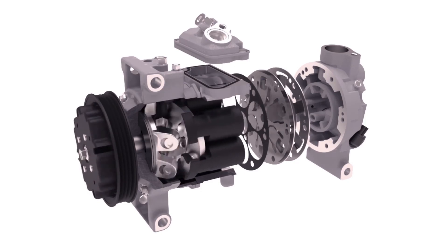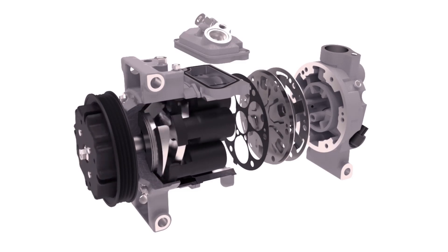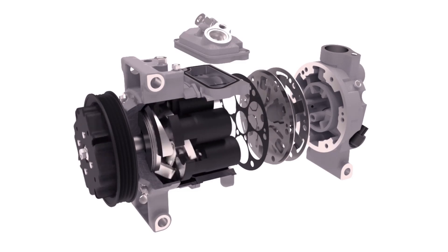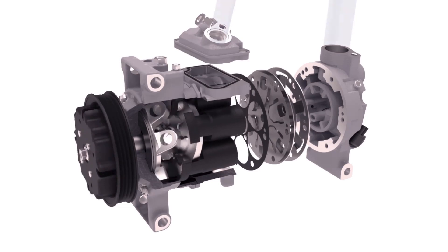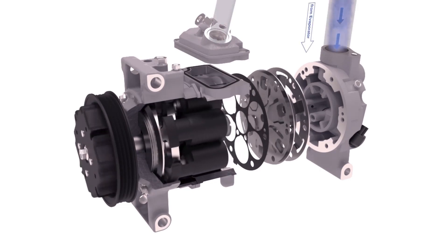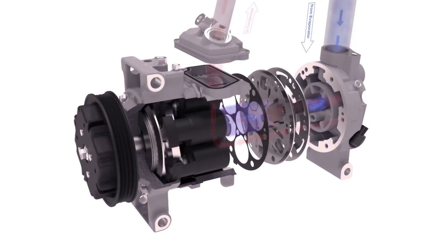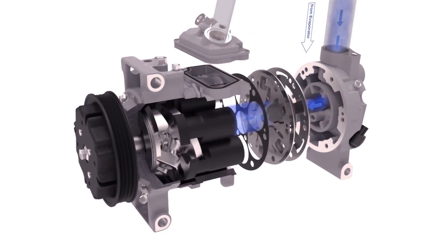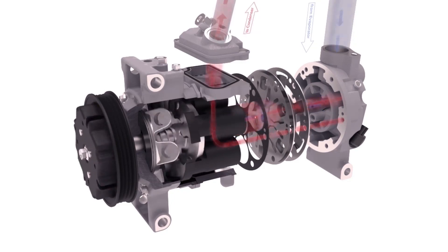The compressor creates a high pressure at the discharge port and a low pressure at the suction port. The compressor sucks in the gaseous refrigerant from the evaporator, where this superheated refrigerant has absorbed heat from the passenger compartment.